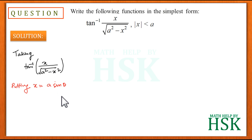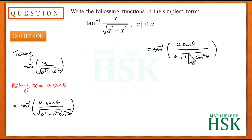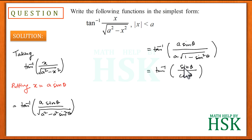Placing x equal to a sine theta, I get tan inverse of a sine theta upon square root of a square minus a square sine square theta. Taking a as common, I get tan inverse of a sine theta upon a into square root of 1 minus sine square theta. Since 1 minus sine square theta equals cos square theta, this becomes cos theta, and the a's cancel, giving tan inverse of sine theta upon cos theta, or tan inverse of tan theta, which equals theta.